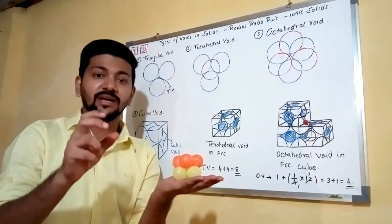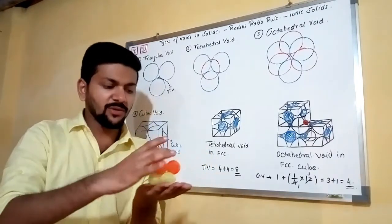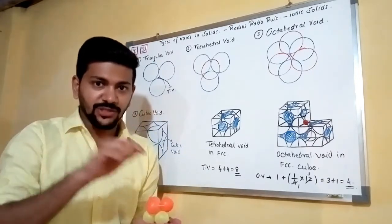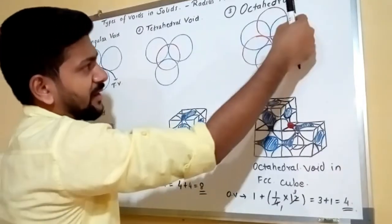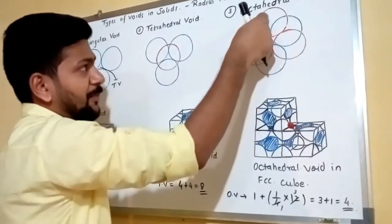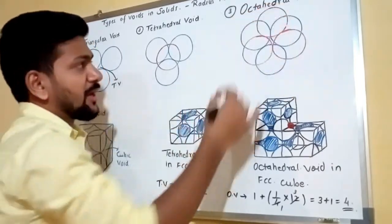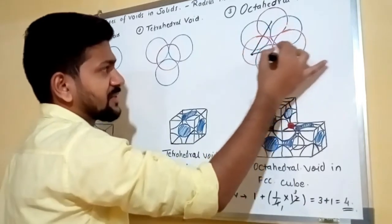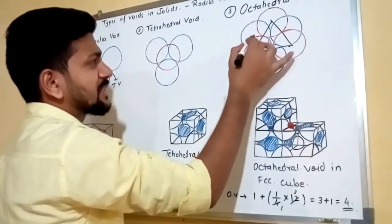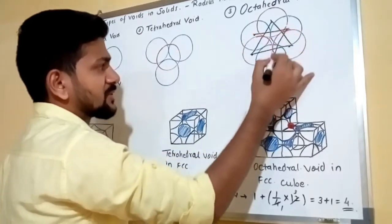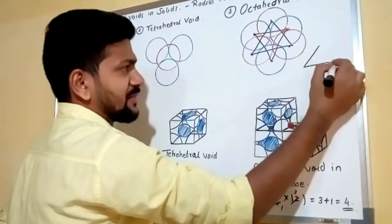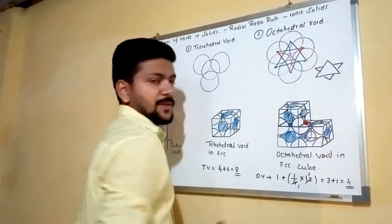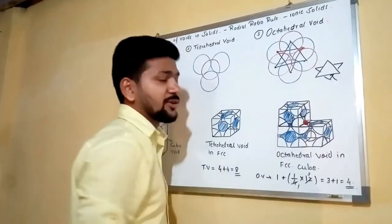To identify an octahedral void in a given particle arrangement, look for two triangles placed opposite to each other. If you join the centers of the top triangle and the bottom triangle, you get two inverted triangles. The void produced inside this arrangement is an octahedral void.